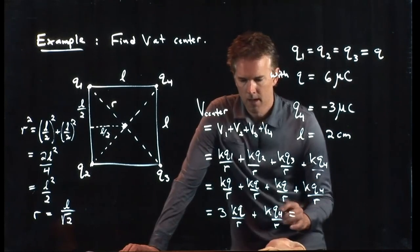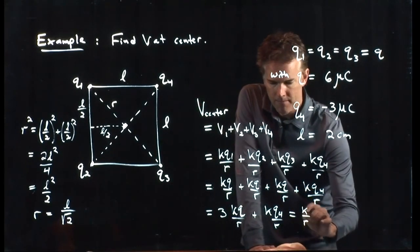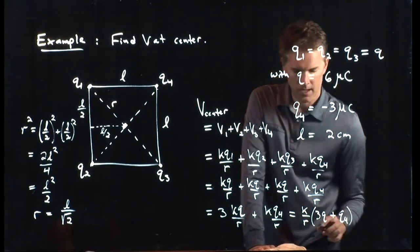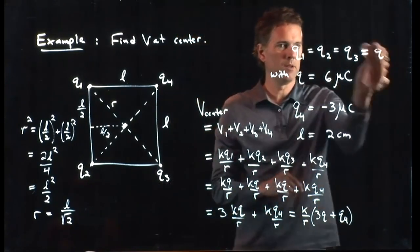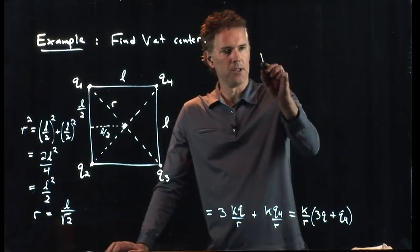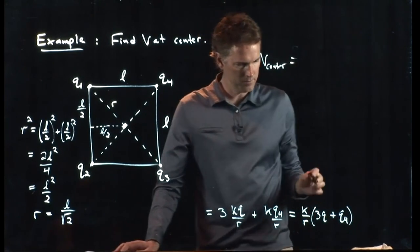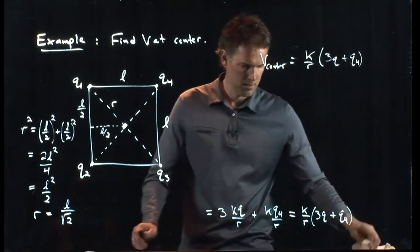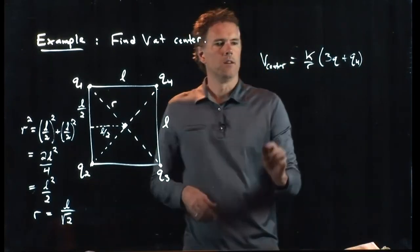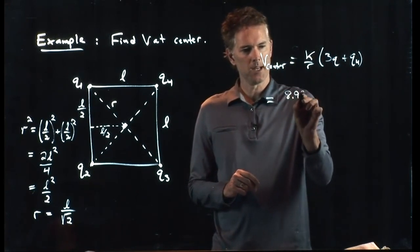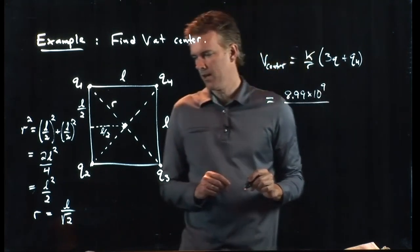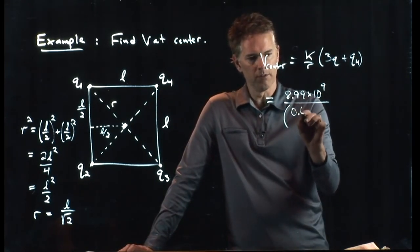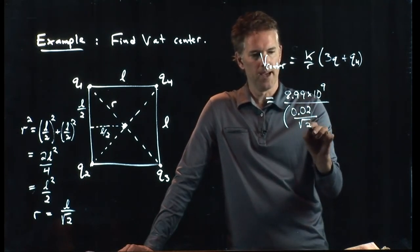We've got K over R out in front, and then we have 3Q plus Q4. Let's make some room and plug in some of these numbers. The potential at the center was K over R times 3Q plus Q4. We know that K is 8.99 times 10 to the 9. R we just said was L over root 2. L we said was 2 centimeters, so that's 0.02 meters divided by root 2.